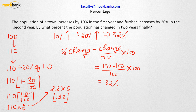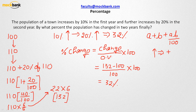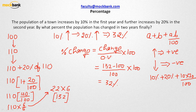There is a formula called the AB formula for two successive changes: A + B + AB/100. Increment is written as a positive value and decrement as a negative value. Here A = +10%, B = +20%, so the result is 10 + 20 + (10 × 20)/100 = 30 + 2 = 32%. That is how you use the AB formula.